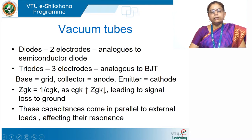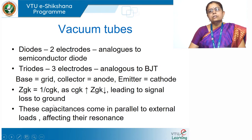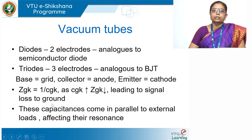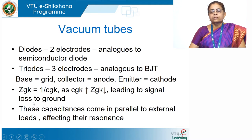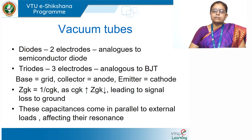The cathode is always powered with a negative DC signal and the anode is given a positive DC signal. The grid, depending on the functioning of the electrode, will have either a positive or a small negative signal. These vacuum tubes were the first devices used for electronic signal generation, amplification, and oscillation. Because they are now obsolete, you are not studying them as a course.